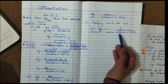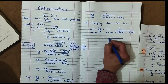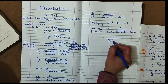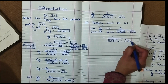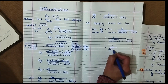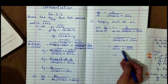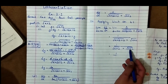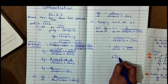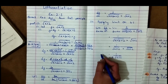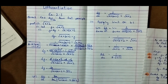Now we apply delta x approaching 0. Delta x becomes 0, so we get 1 over under root x plus 0 plus 2 plus under root x plus 2, which means 1 over under root x plus 2 plus under root x plus 2. This equals 1 over 2 times under root x plus 2. This is the derivative dy/dx found by the first principle method.